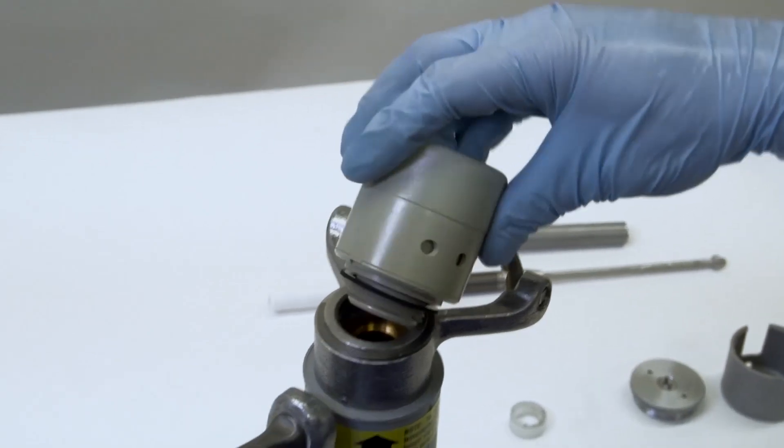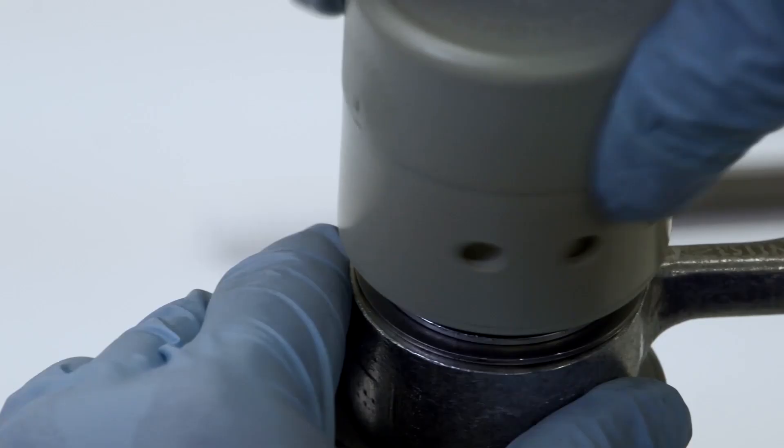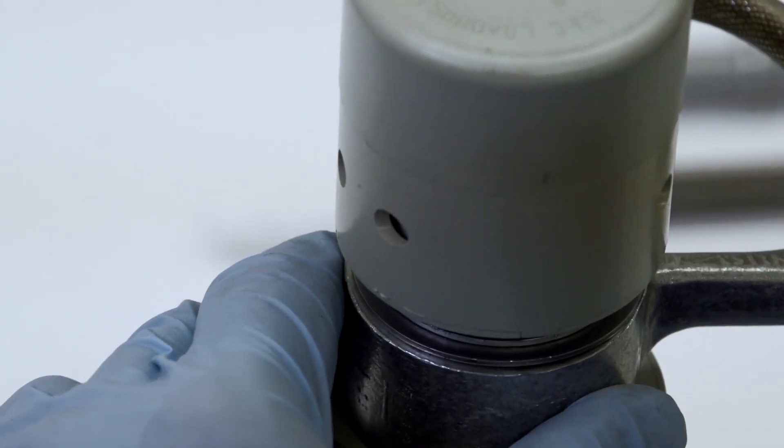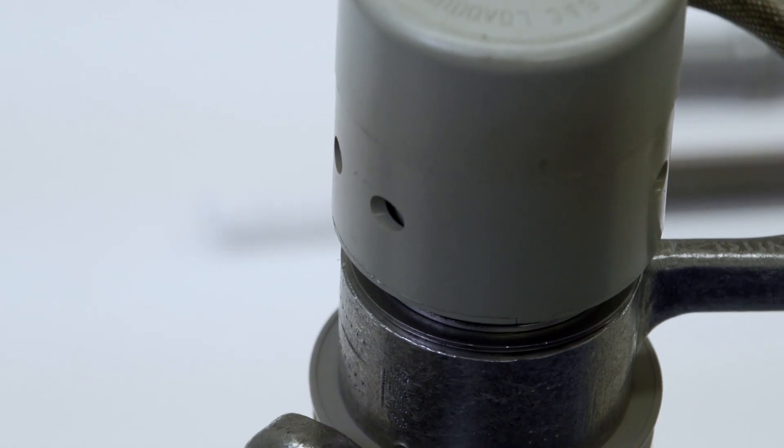Then secure the silencer onto the end of the inner tube assembly. If the silencer has metal threads, apply a thin coating of petroleum jelly to the threads.